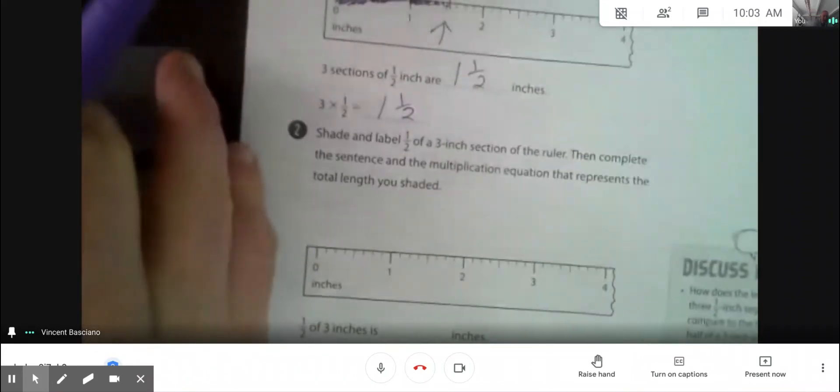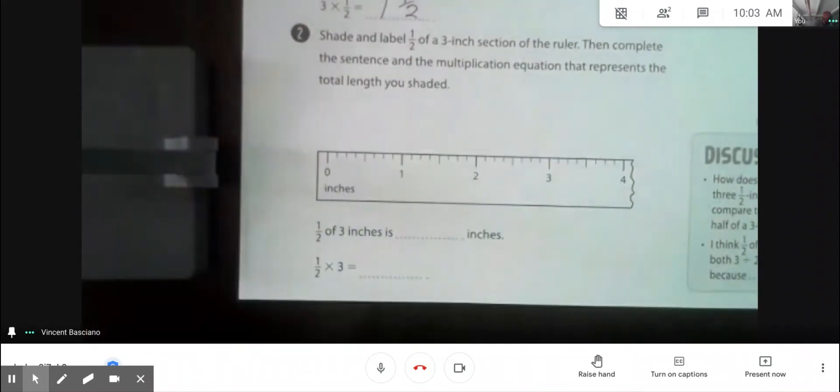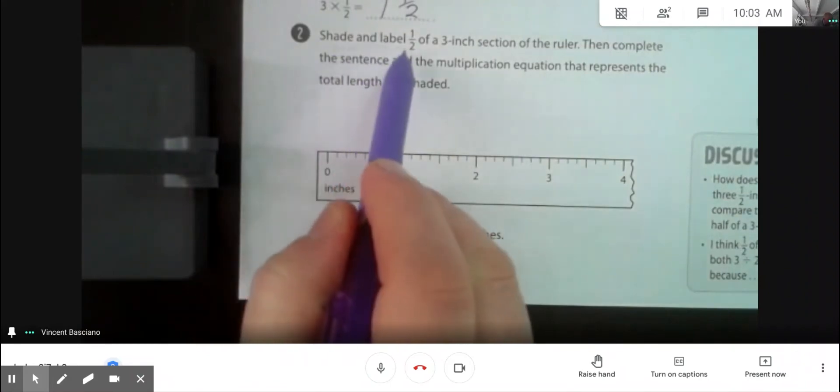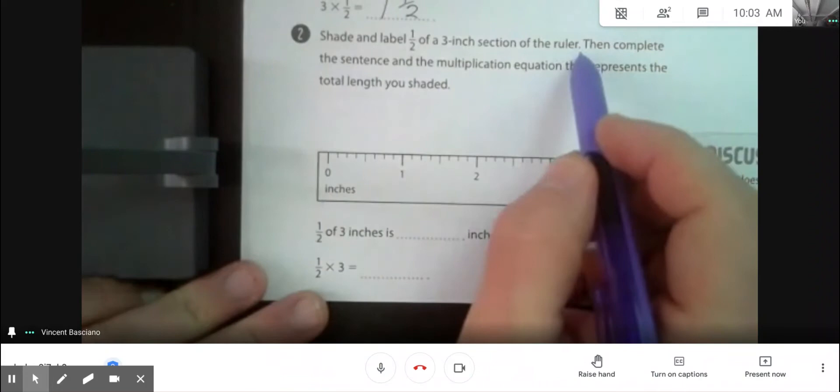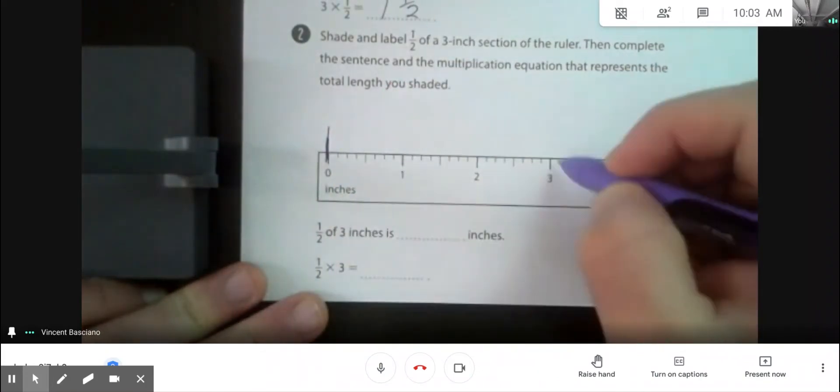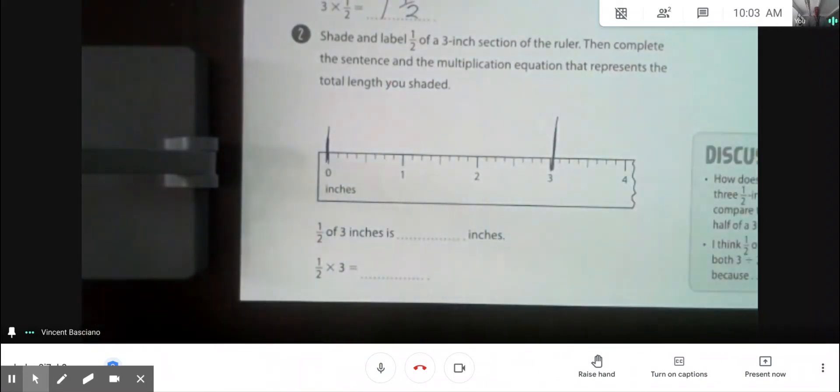So now, let's look at part number two. It's the other way of doing this. Shade and label one-half of a three inch section of the ruler. Well, here, from here to here, is three inches, okay? Now I need to shade and label a half of that.